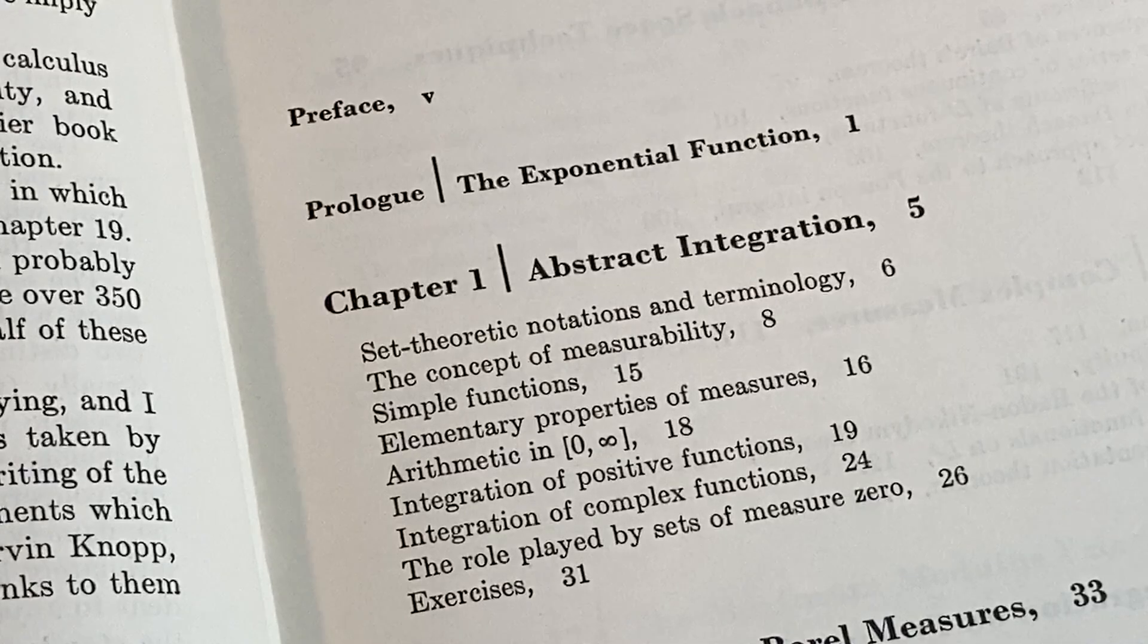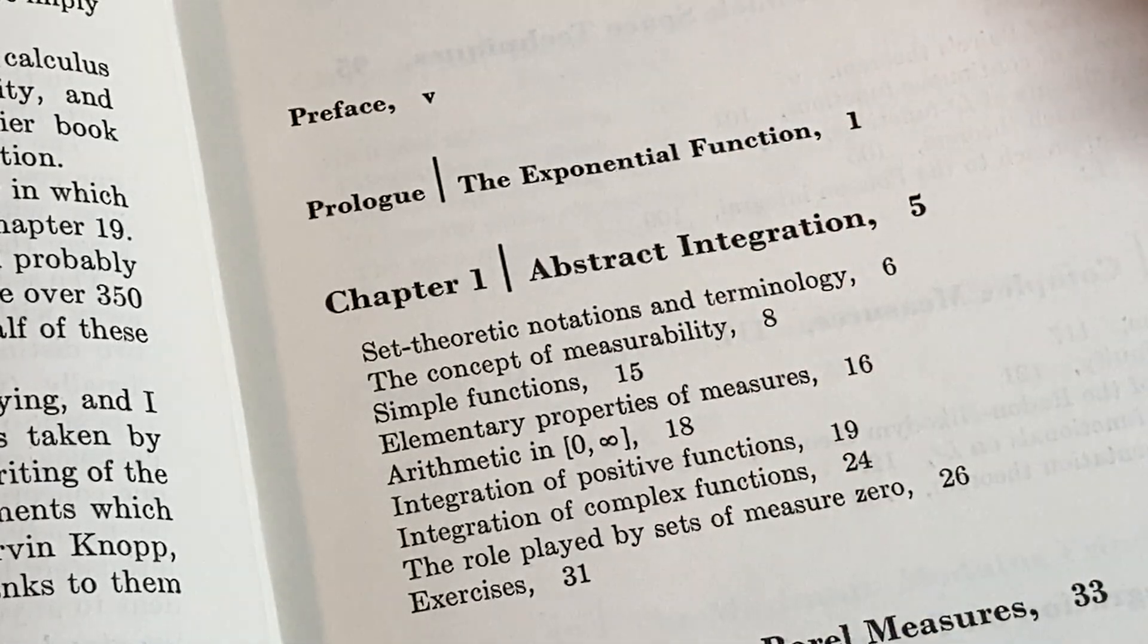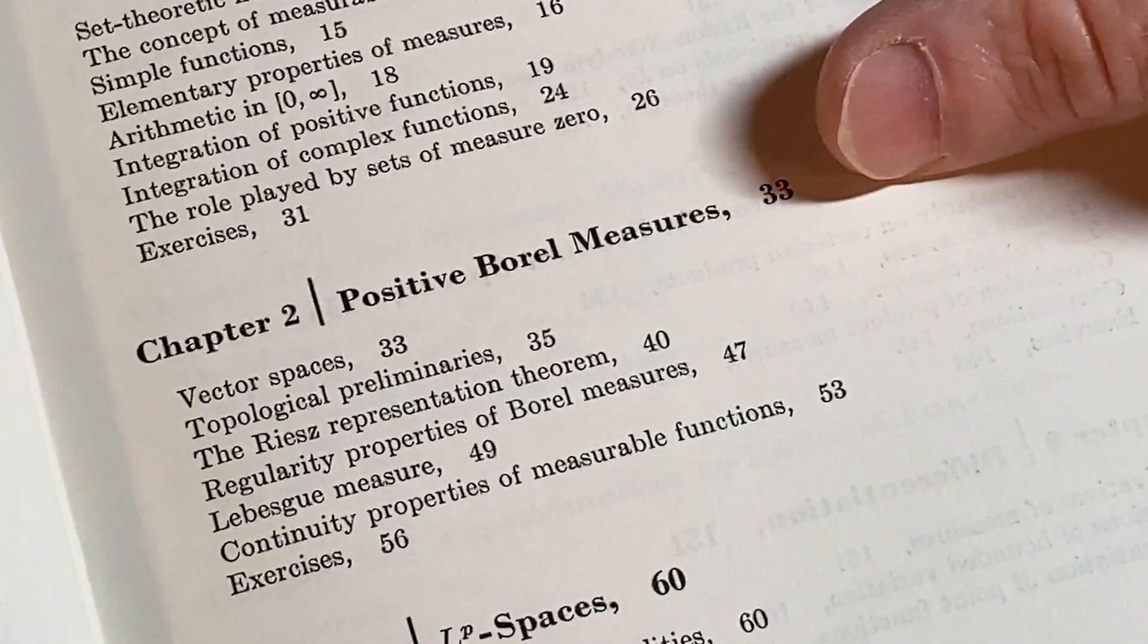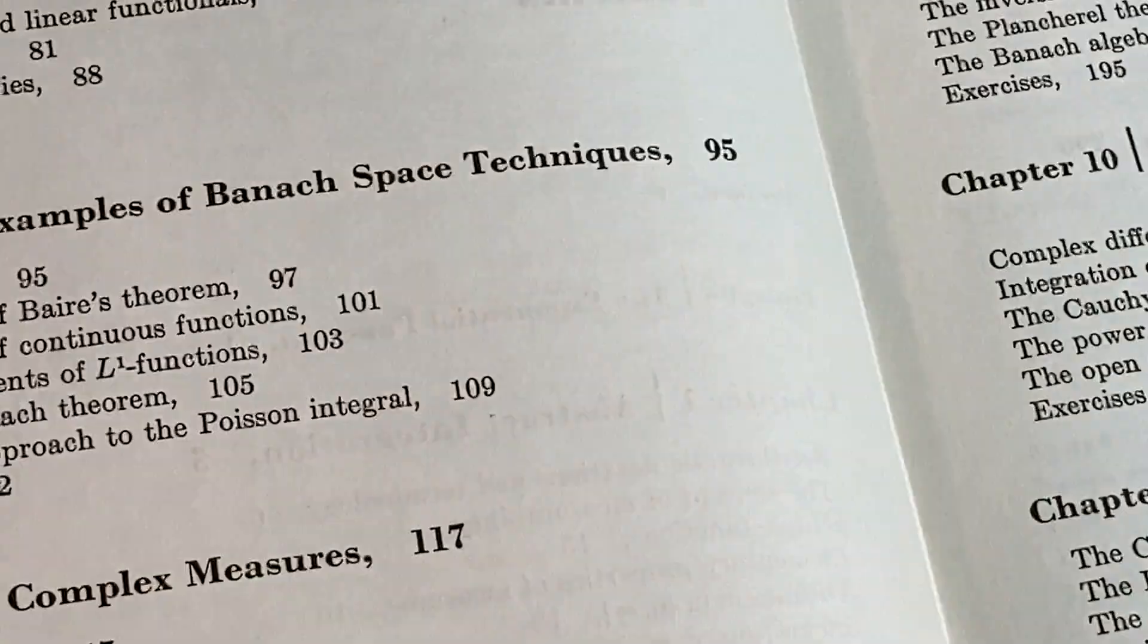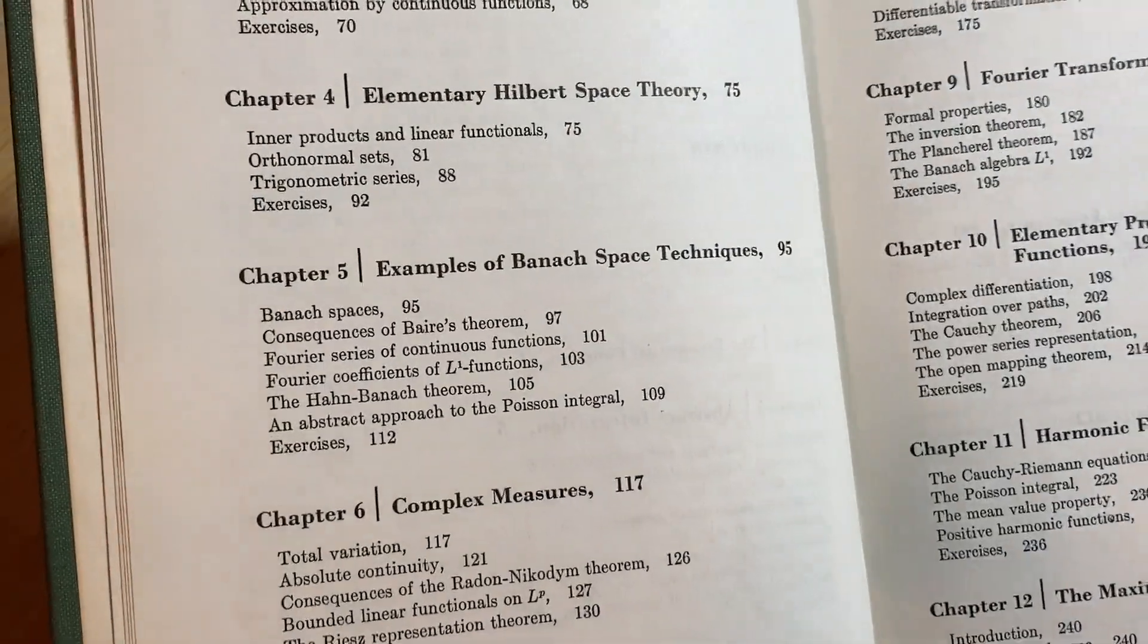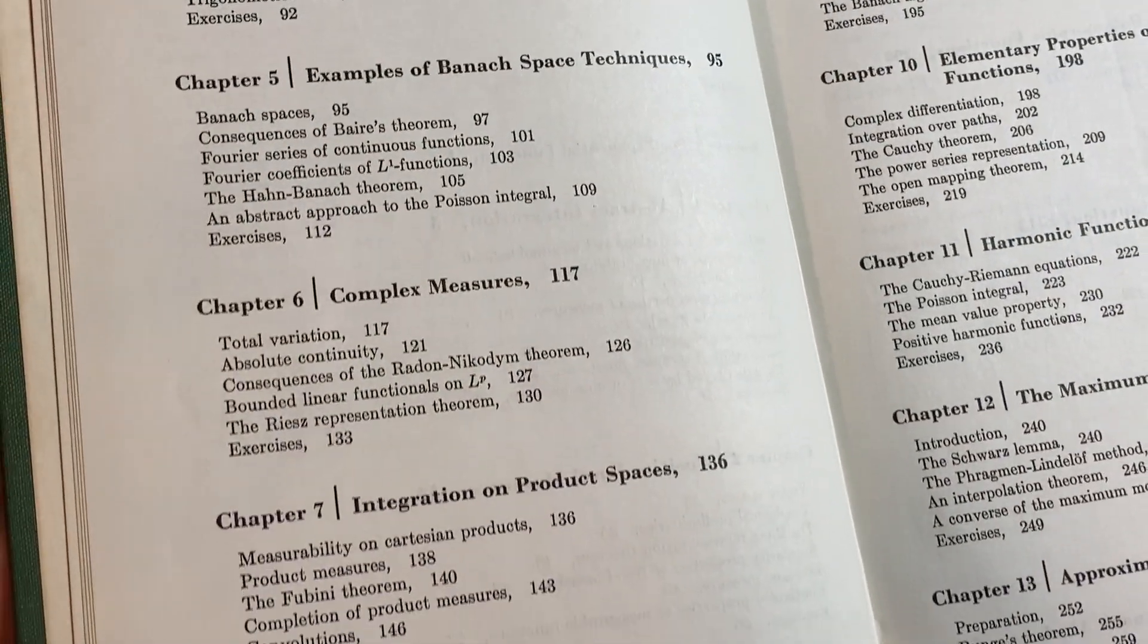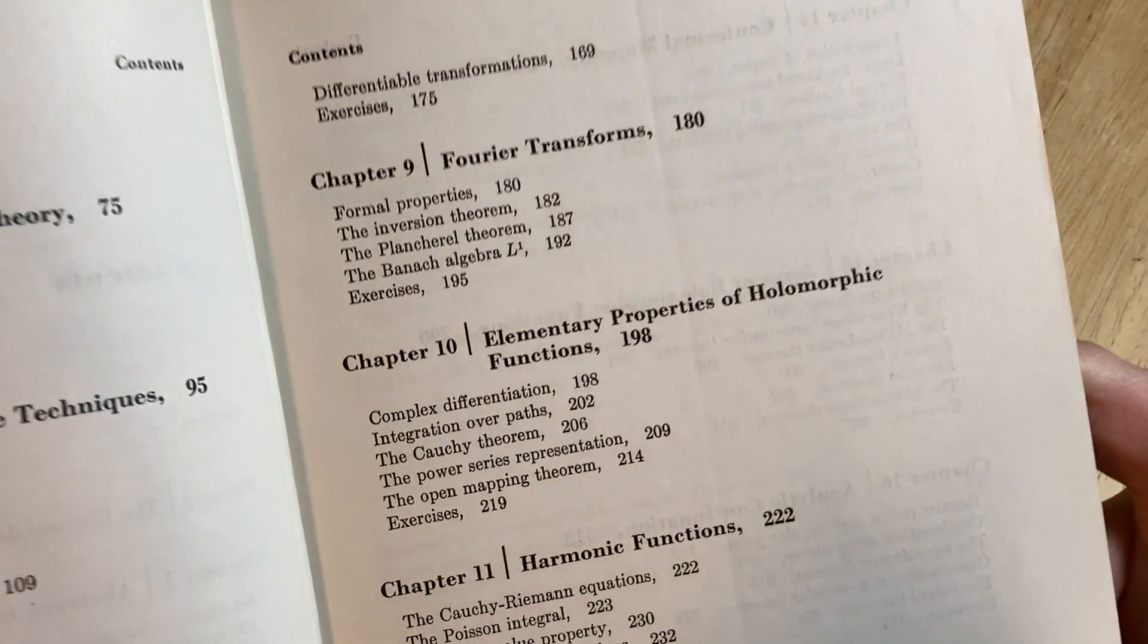Abstract integration. So that's chapter one, positive boreal measures, LP spaces. Let me back this up here so you can see some of these topics that you maybe have never seen. Maybe you have, if you're in grad school or you went to grad school.